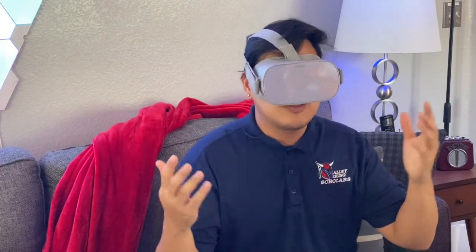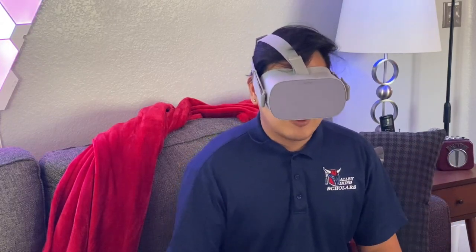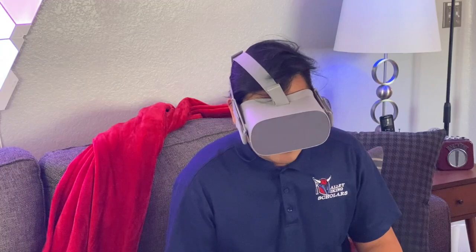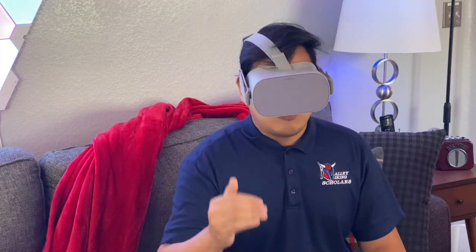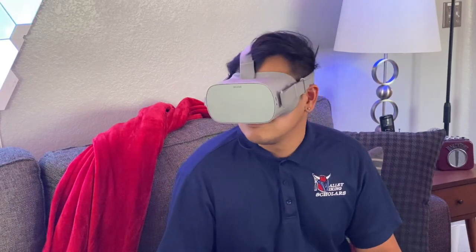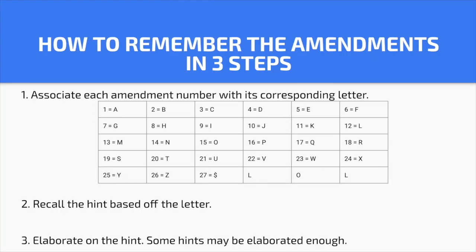We all know that time has changed and technology and society evolve. The Constitution is over 200 years old, and obviously there need to be some changes. There are 27 amendments — 27 changes to the Constitution. The first 10 are the Bill of Rights, which the Anti-Federalists pushed for in order to ratify the Constitution; these rights honor your individual freedoms. I'm going to show you a quick and easy way of remembering all 27 by following a simple three-step process. When we get to the 27th amendment, we'll use the dollar sign as a letter, and you'll see why when we get there.